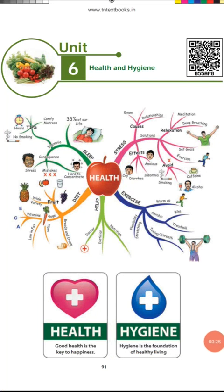Chapter 6, Health and Hygiene. First, health is wealth. The word health means complete emotional and physical well-being. The World Health Organization defined health as a state of complete physical, mental, and social well-being.